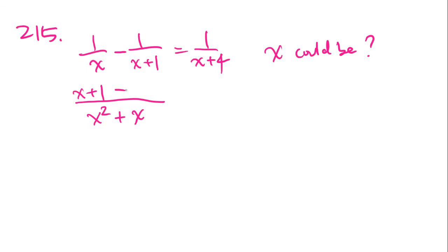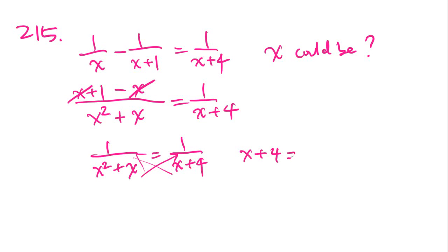215 says, if 1 over x minus 1 over x plus 1 equals 1 over x plus 4, then x could be what? This is going to be another problem where we simplify one side of the equation, and we cross-multiply. Right away, we see that we can actually cancel out the x's. So we get 1 over x squared plus x equals 1 over x plus 4. Cross-multiply, and we get x plus 4 equals x squared plus x. We can cancel out the x's, and we are left with 4 equals x squared. That means x can be 2 or negative 2. If you look in the answer choices, c is negative 2.